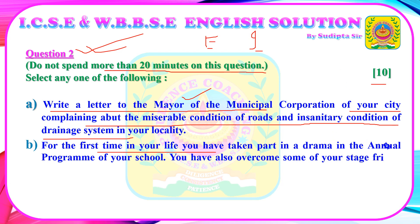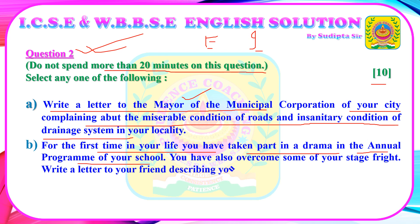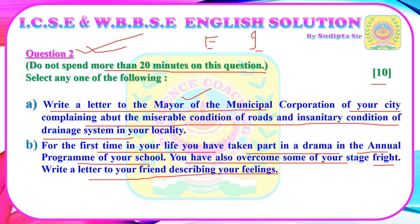Option B: For the first time in your life, you have taken part in a drama in the annual program of your school and have overcome some of your stage fright. Write an informal letter to your friend describing your feelings, how you overcame your stage fear, your performance, and your experiences after performing in the drama.